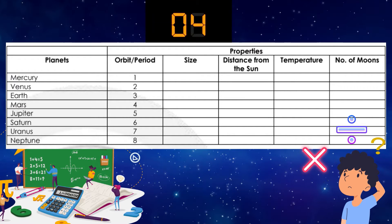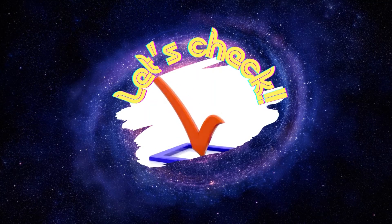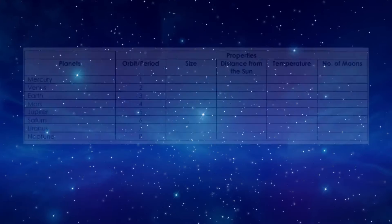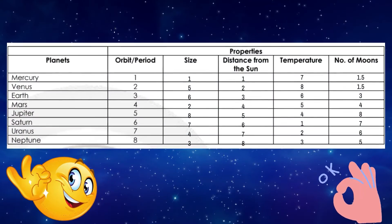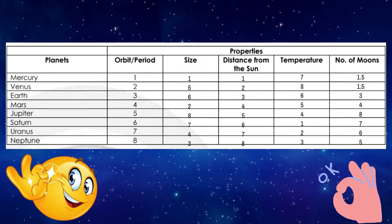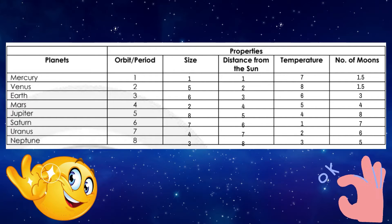Again, be guided by our Leaping Science Quarter 4, Week 6. Let's proceed with checking — let's check your work. Here are our suggested answers. Check your own answers. These are the answers for size, distance from the sun, temperature, and number of moons — and this is their ranking. Are you done with this? Good job!